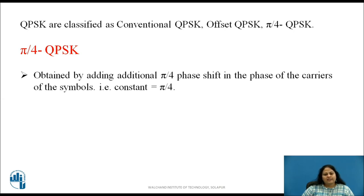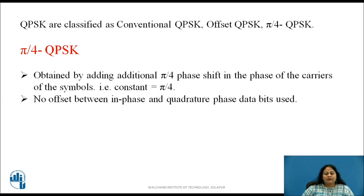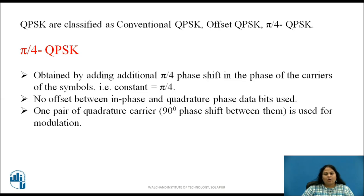Pi by 4 QPSK is obtained by adding an additional pi by 4 phase shift in the phase of the carriers of the symbols, that is, constant equals pi by 4. There is no offset between in-phase and quadrature phase data bits, and one pair of quadrature carriers is used for modulation.